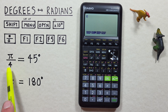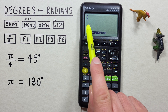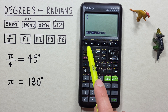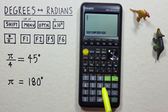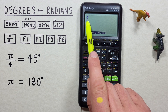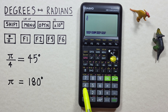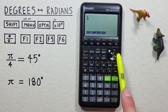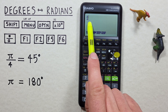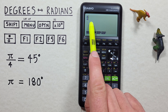So we have pi over 4. We press our fraction key, and in the top box we need pi. So to do that, we press shift times 10 to the x. There we go, we have pi in the top. Scroll down and enter 4 in the bottom box. And scroll to the right so that we're out of that box. Now we need to tell this calculator these are radians.